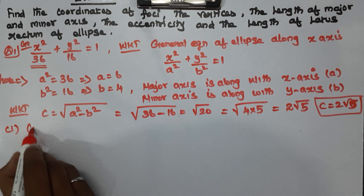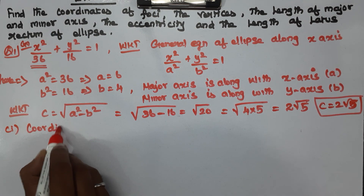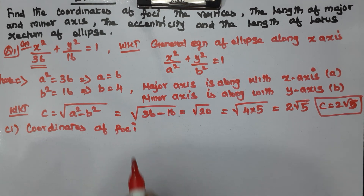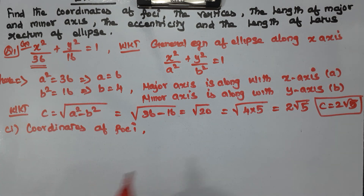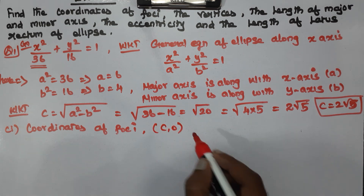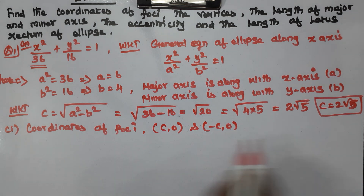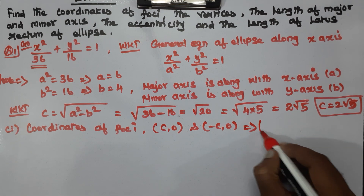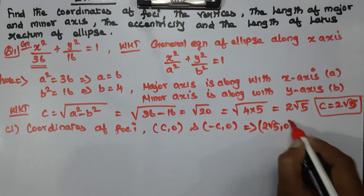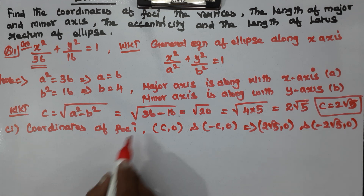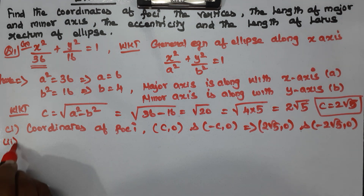Number 1: coordinates of focus. Since the major axis is along the x-axis, the coordinates of foci are (c, 0) and (−c, 0), which gives us (2√5, 0) and (−2√5, 0).